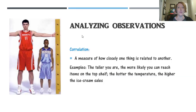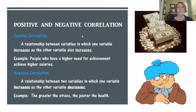When looking at the data we collect, we need to analyze the results. One of the ways we do that is through correlation — a measure of how closely one thing is related to another. For example, the taller you are, the more likely you are to reach items on the top shelf; the hotter the temperature, the higher the ice cream sales. One may or may not influence the other, but you can't say for sure. Positive correlation means as one variable increases, the other also increases — for example, people who have a higher need for achievement tend to have higher salaries.